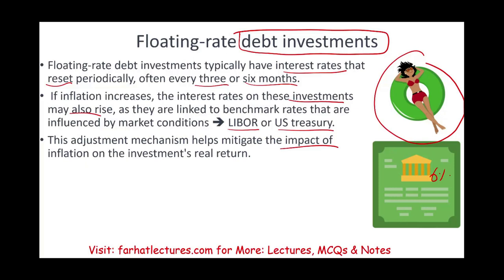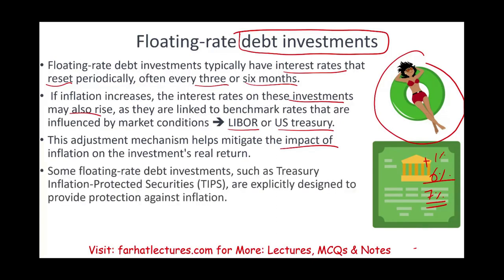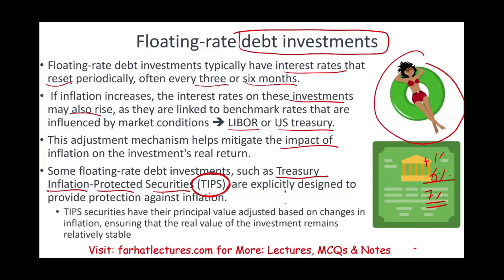Some floating rate debt investments are specifically designed to protect you against inflation. In the U.S., we have Treasury Inflation-Protected Securities, or TIPS. Their whole purpose is to adjust the value of the investment to protect you from inflation. Bear in mind, if inflation goes down, your real return would also go down. TIPS have their principal value adjusted based on changes in inflation, ensuring the real value of the investment remains relatively stable.